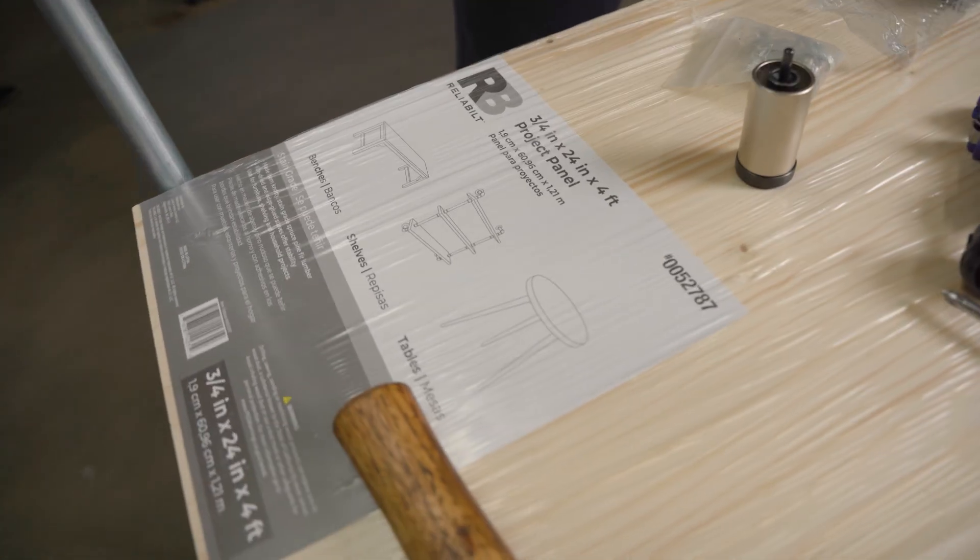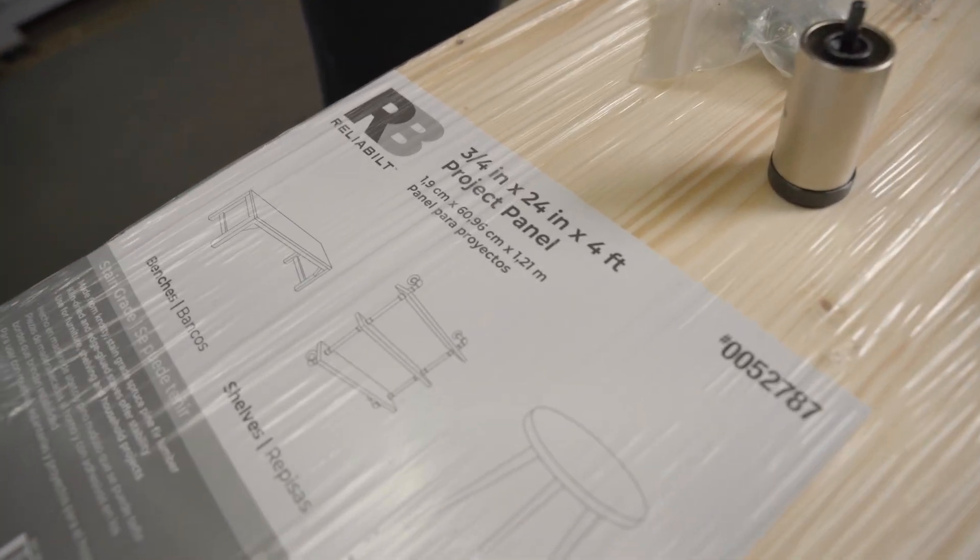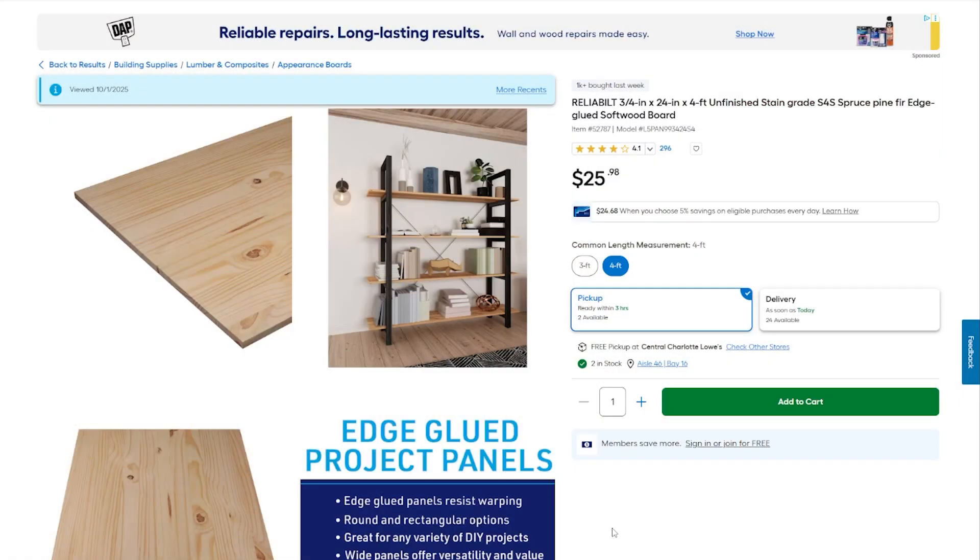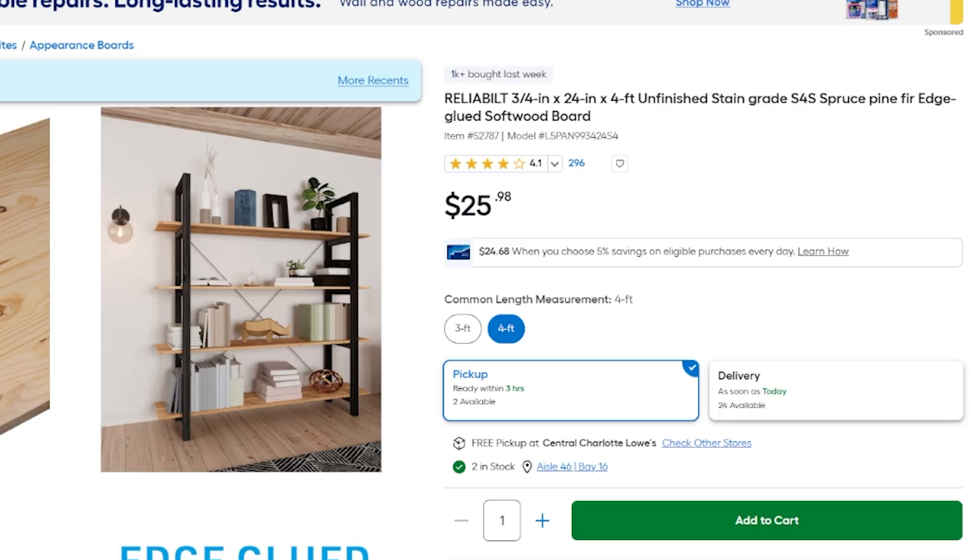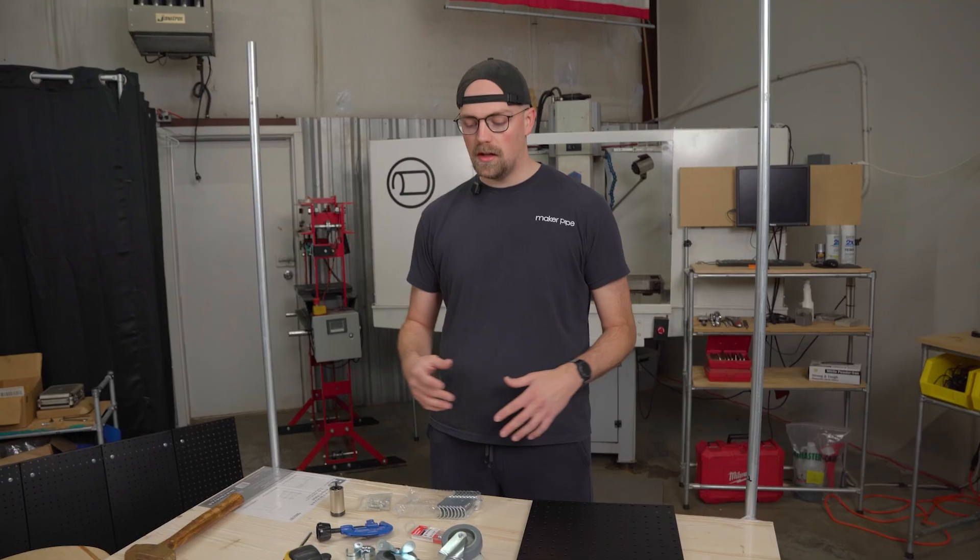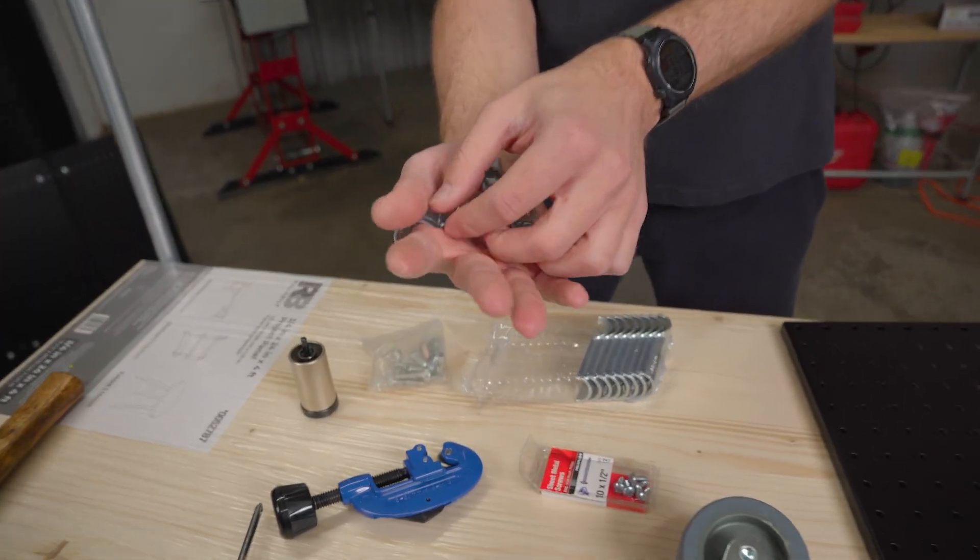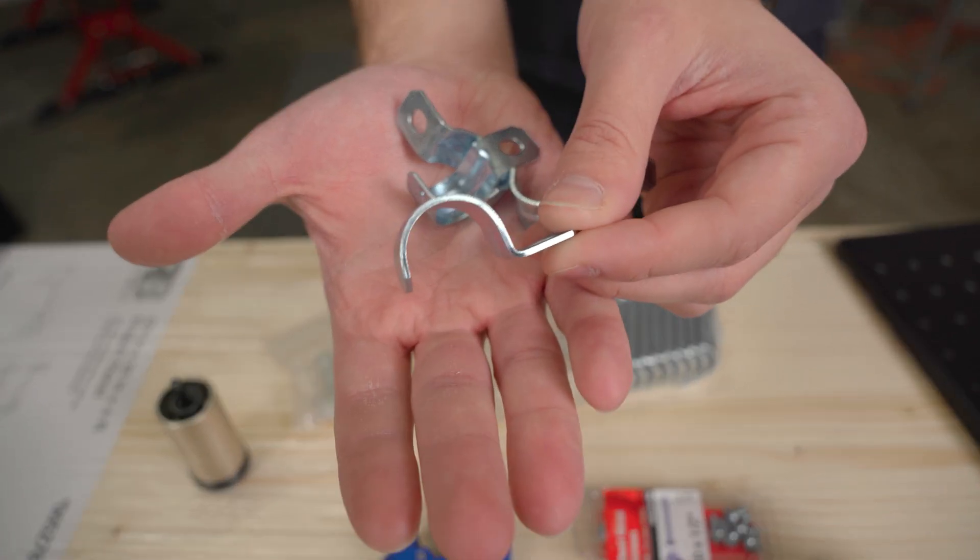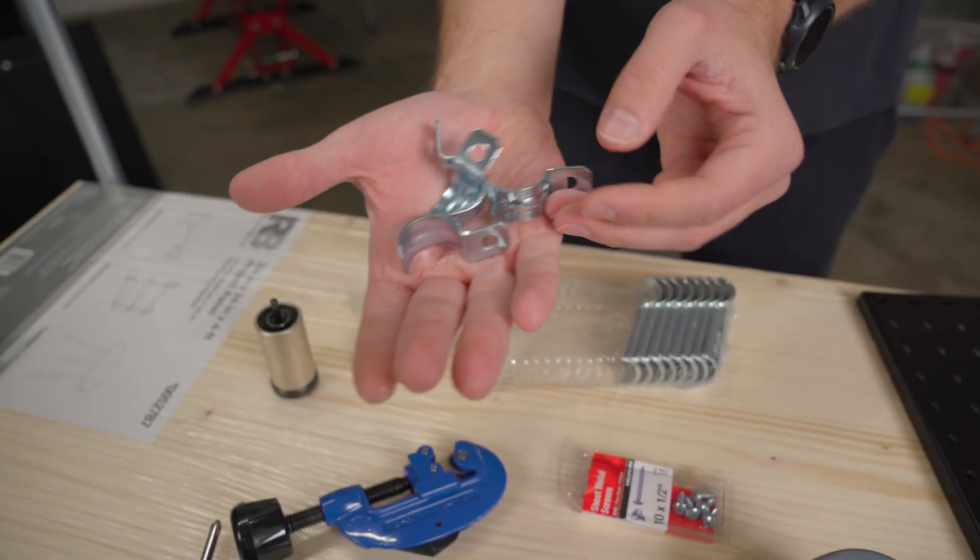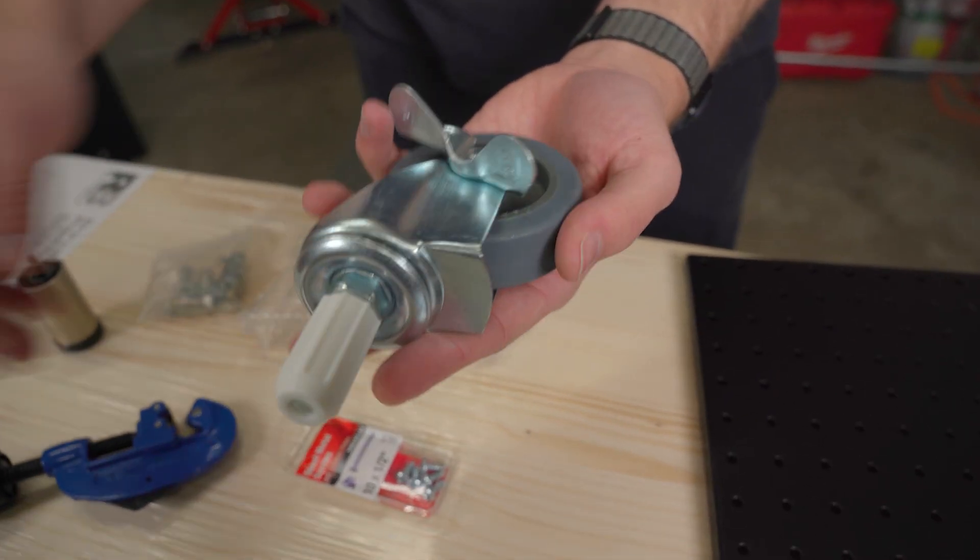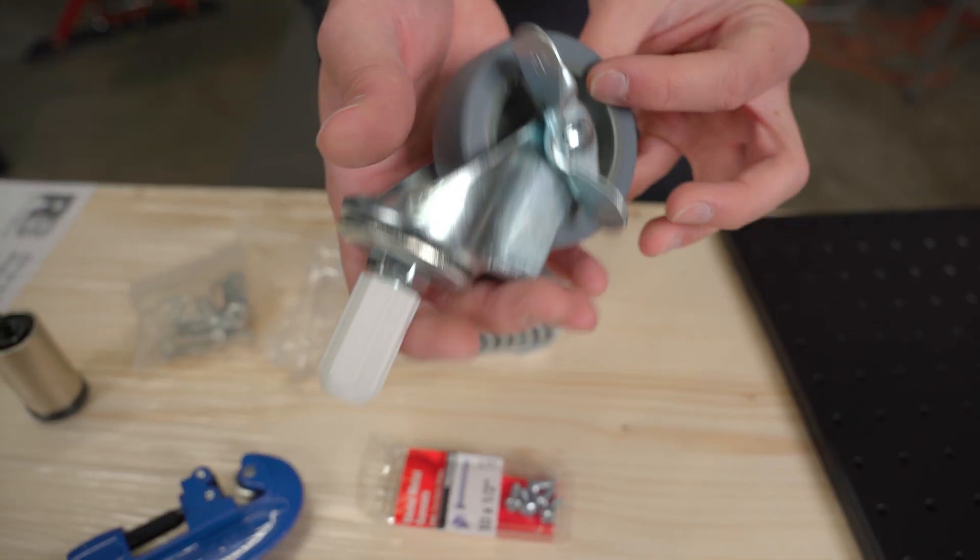I think they're underrated you can sand it and of course stain it and stuff. I usually just use them raw that way they can get messed up whatever I can just buy another one or sand it. They're super inexpensive this one is four foot by 24 inches and I think it was like 20 bucks something like that. So we're going to be securing that to our framework utilizing some of these accessories.